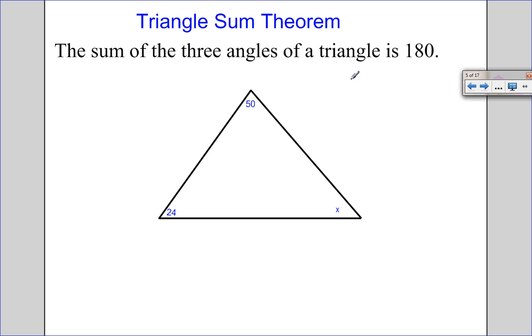We know these angles have to equal 180. So, 50 plus 24 plus X equals 180. 74 plus X equals 180. Subtract the 74, so X equals 106 degrees.